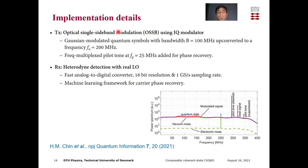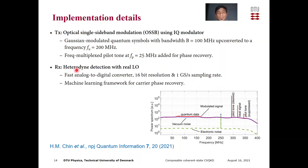Here are a few details about the implementation. We use optical single sideband modulation with an IQ modulator. The Gaussian modulated quantum symbols are produced in a sideband 100 MHz wide, which is the effective speed of our system. We multiplex a pilot tone at 25 MHz for phase recovery, as shown in the spectra. At the receiver, we perform heterodyne detection with the real local oscillator using a fast analog to digital converter with 16-bit resolution and 1 giga sampling rate. During demodulation, we use a machine learning framework for carrier phase recovery and quantum symbol reconstruction.